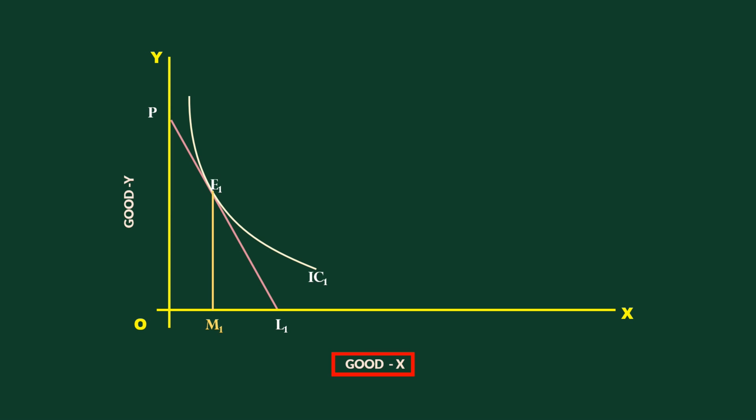Now let us see what happens to the quantity consumed of good X when its price falls, income of the consumer and the price of good Y remaining constant. The price of good X falls. If the consumer spends his entire income on good X, he can buy more. So the point L1 moves to the right. The new price line is PL2. It is relatively flat. The consumer is in equilibrium at E2. He buys M2 units of good X. M2 is more than M1.